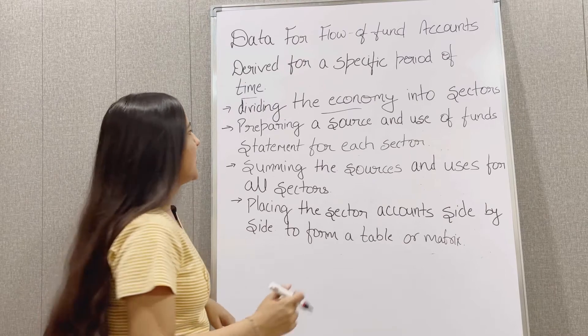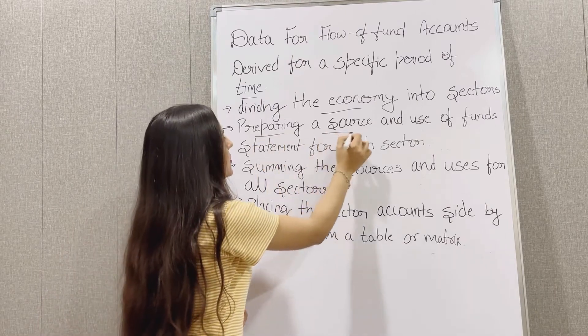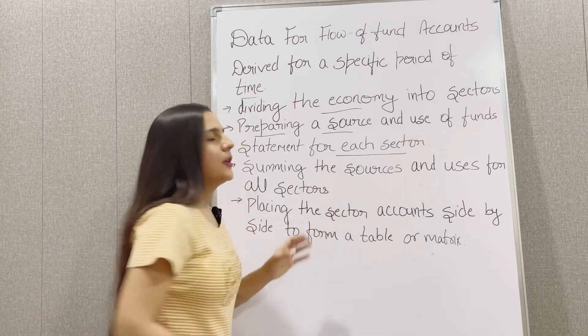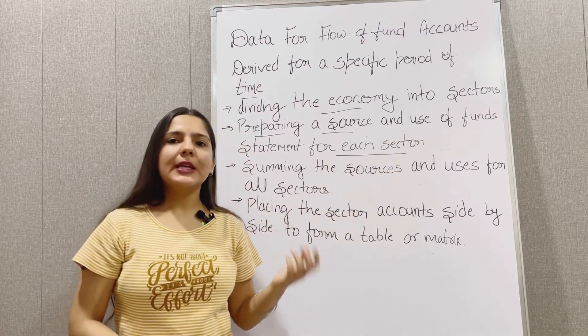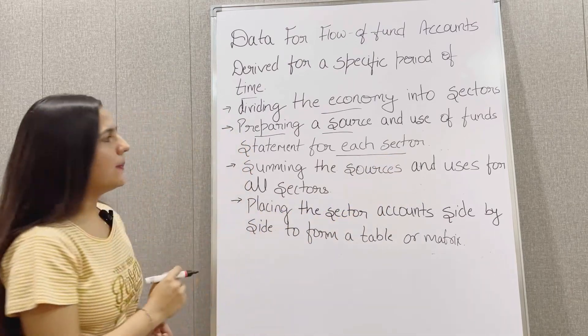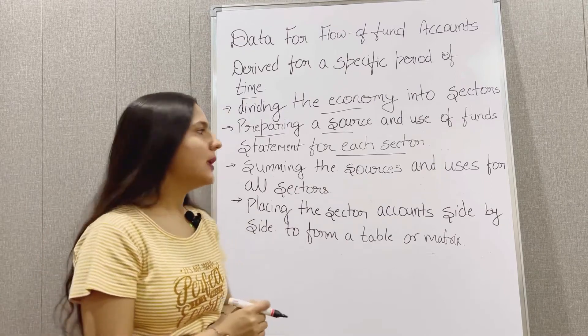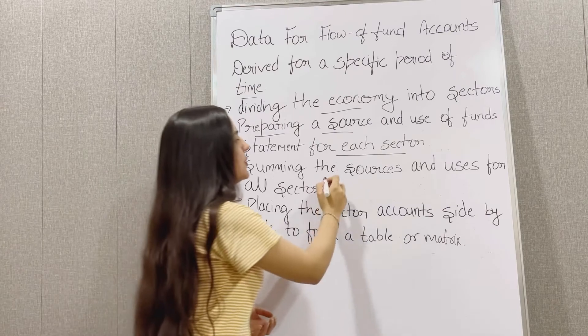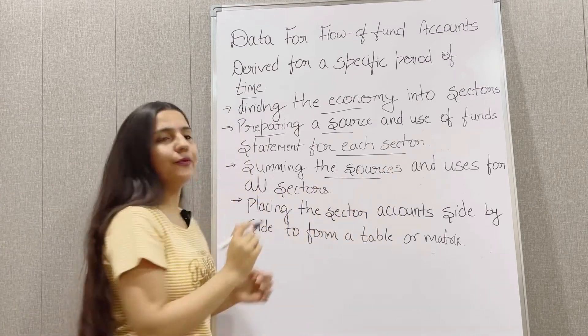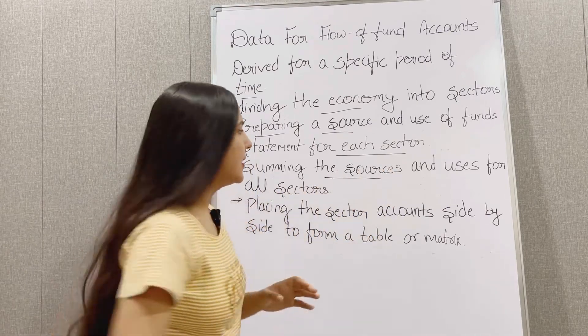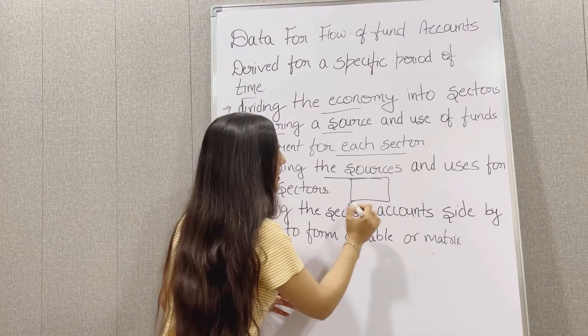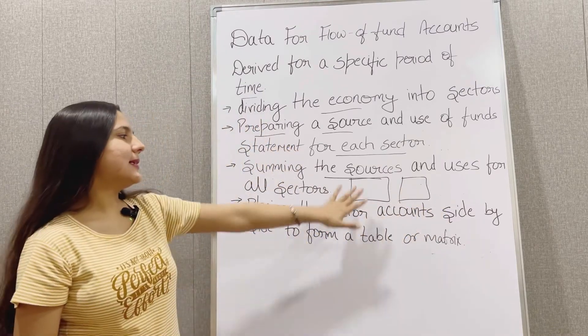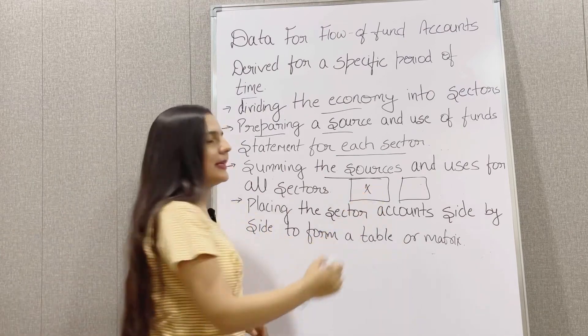After dividing in sectors, the next step is preparing a source and use of fund statement for each sector. Now they have various sectors for each sector. What they do? They prepare a fund statement. Now what is fund statement? Fund statement means the statement that shows the sources and uses of funds for the given sector. Suppose this is a particular sector. Our economy is divided into various sectors. Let's take this first sector for example.